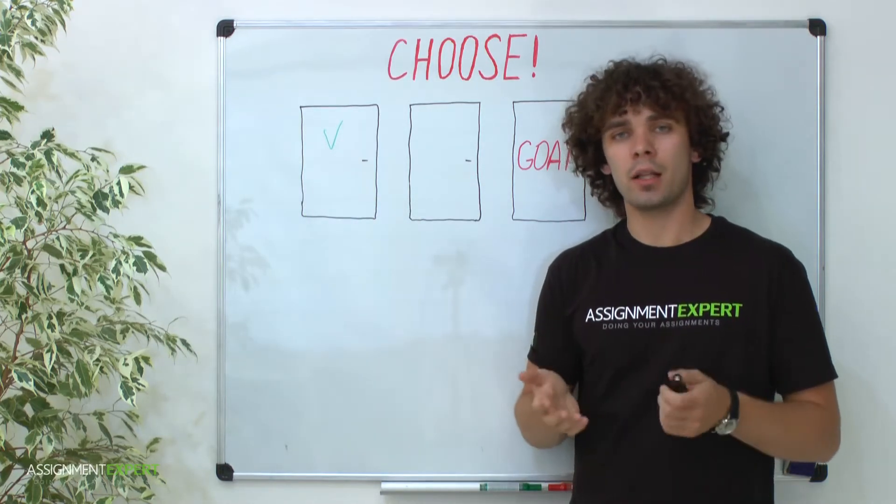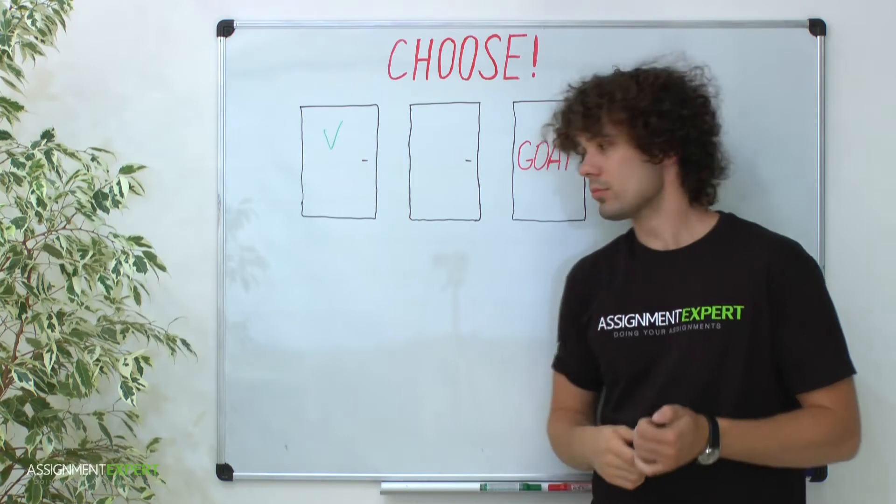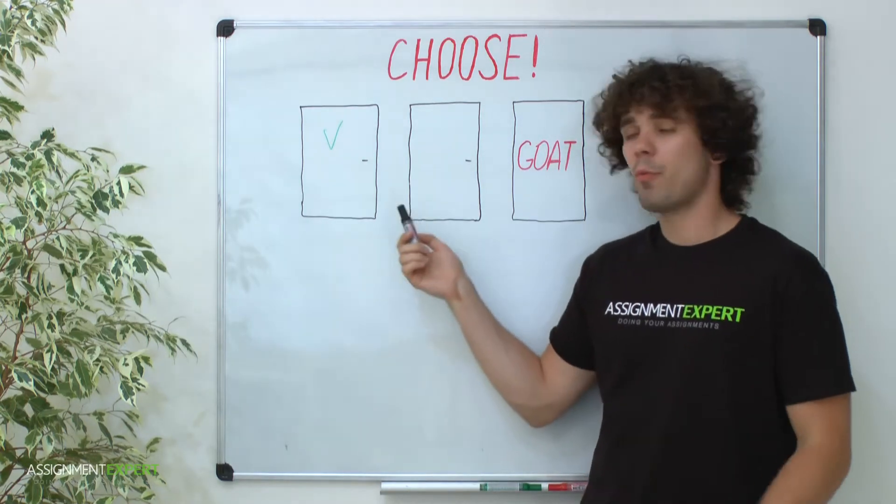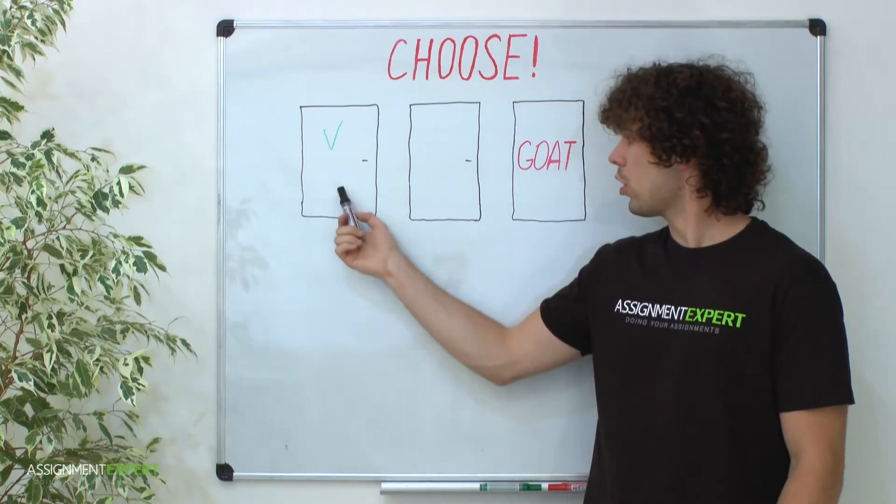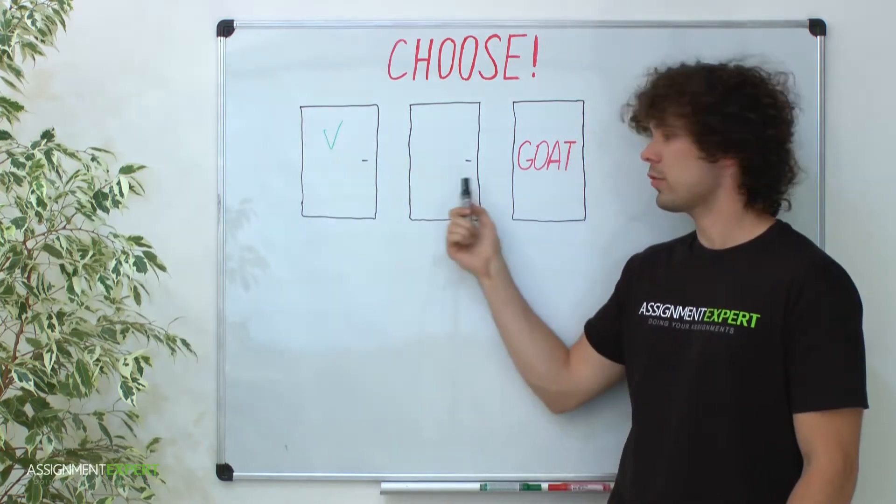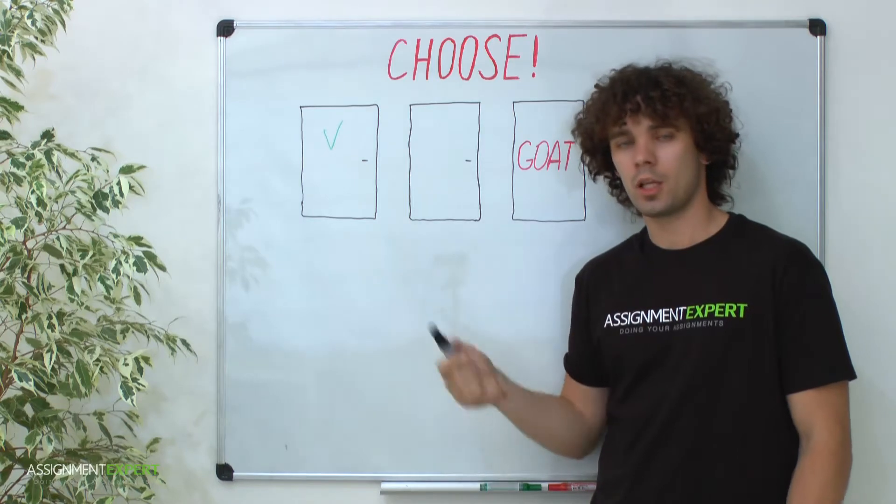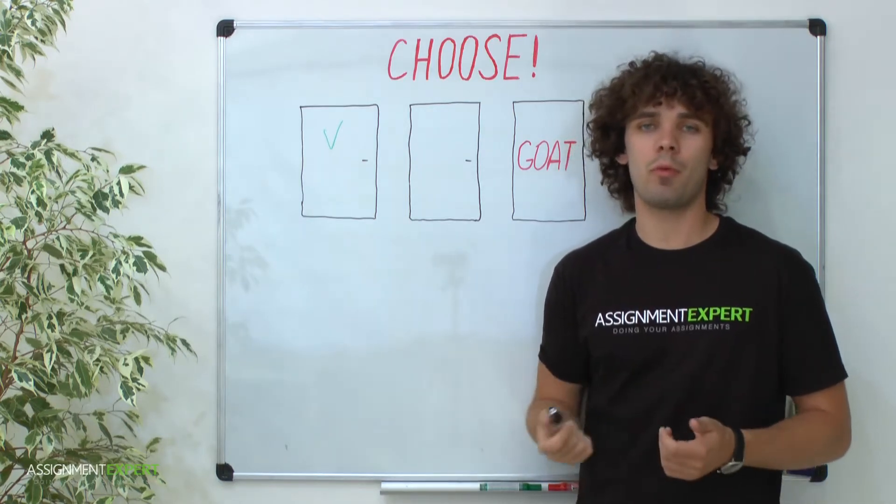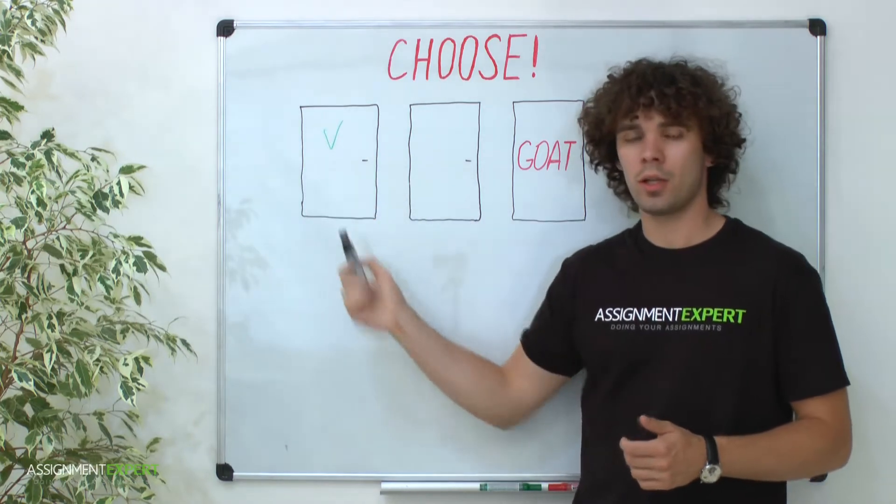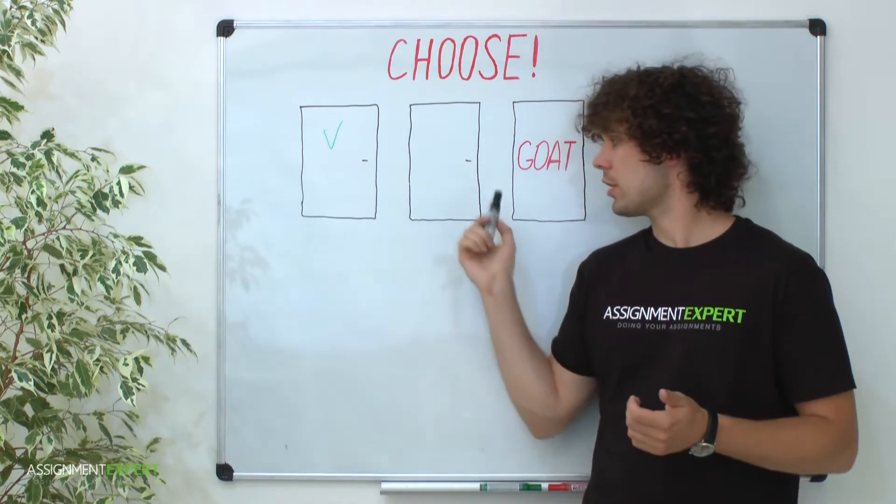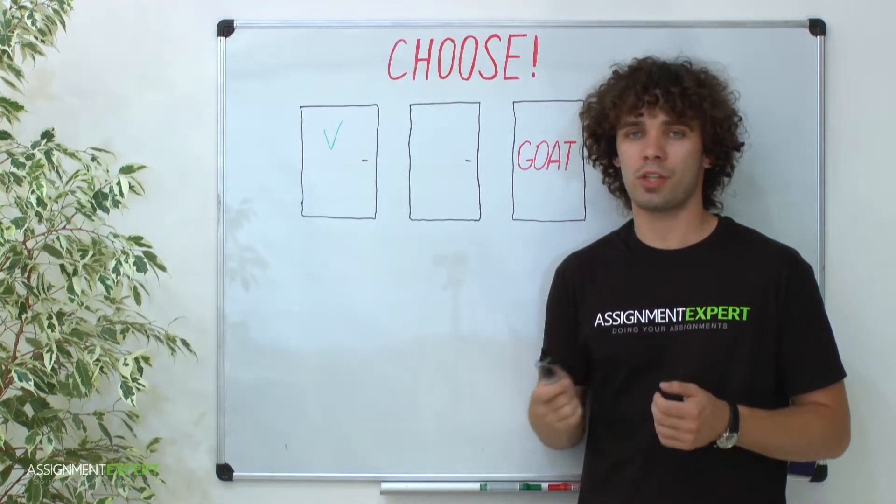While you're thinking, I'll give you some clues. Initially the probability to win a car is one-third for each door. You pick a door, and then I show you a goat behind one of two other doors. Most people now think that the probability to win a car is one-half, because we are left with two doors. But that's wrong. We need to consider the whole situation as a sequence of related events.